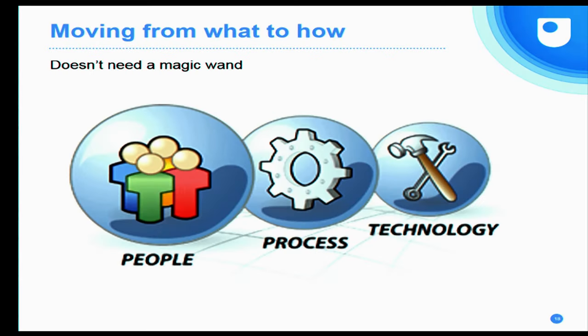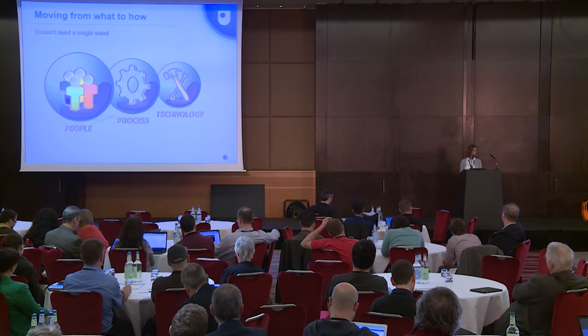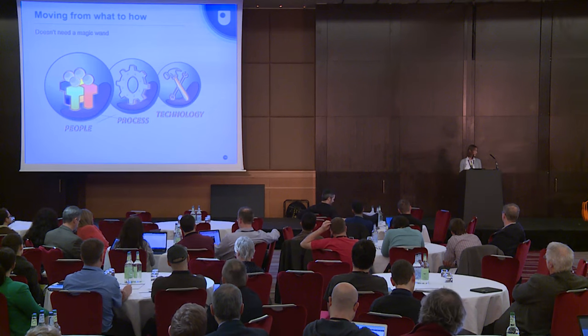So that's brought us up to date, and I'll start to talk about how we've achieved all of that. You don't need a magic wand — it's actually fairly obvious and simple. If you've been on any business change programmes or change management courses, you'll have heard them talk about people, process, and technology. And so that's what I'm going to talk about now.